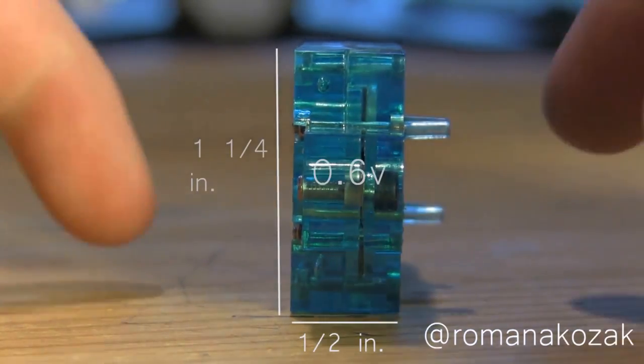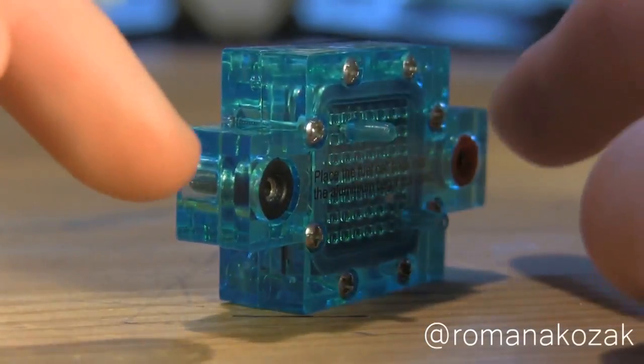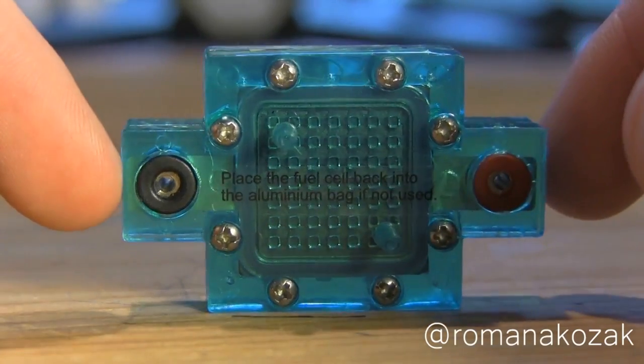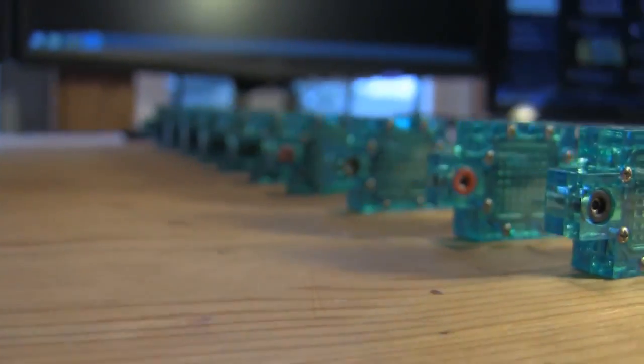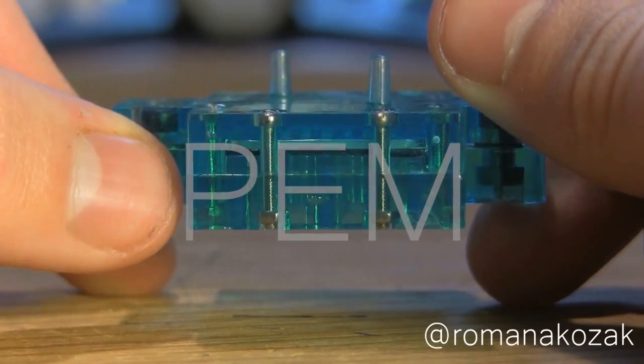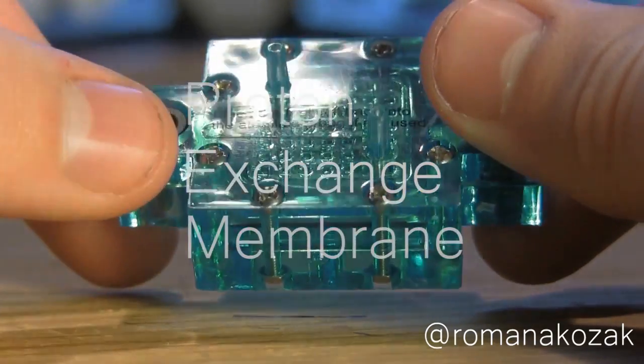These generate around 0.6 volts each but can generate upwards of 1 volt each. So if you have 10 of these in series you can get upwards of 10 volts. This is a PEM fuel cell which stands for proton exchange membrane.